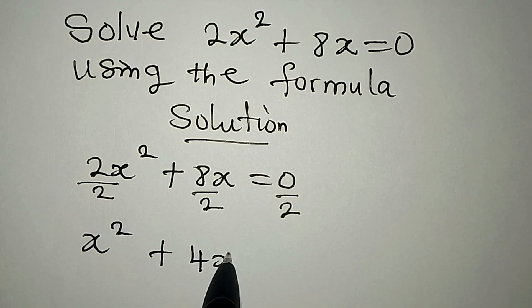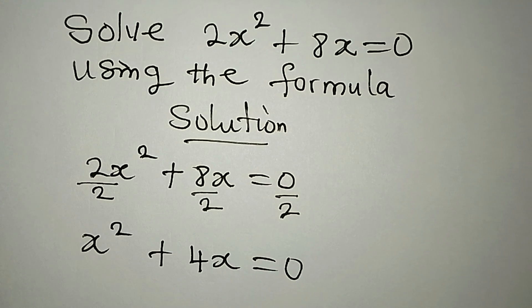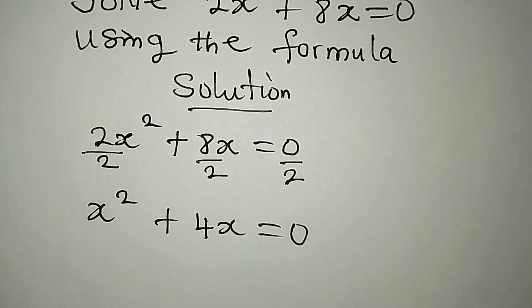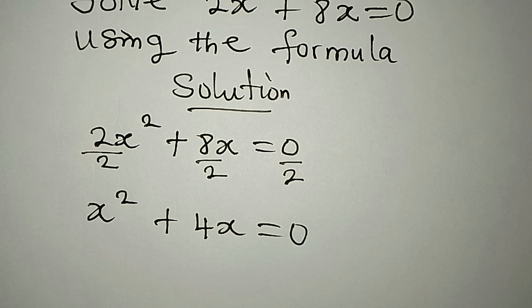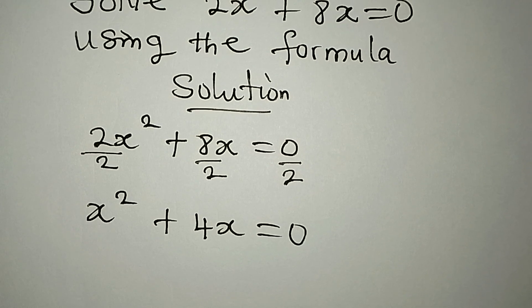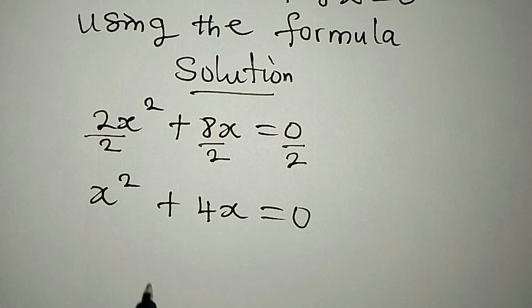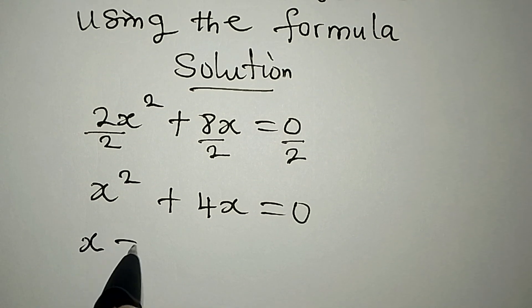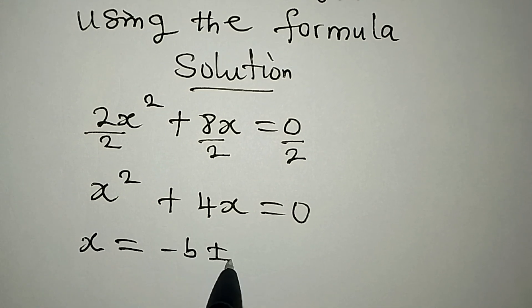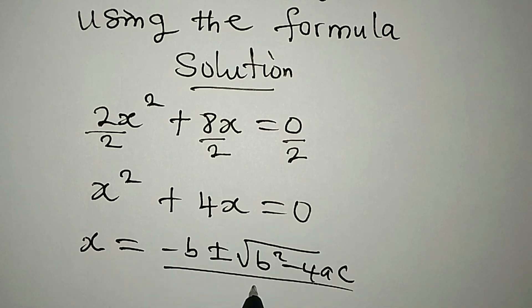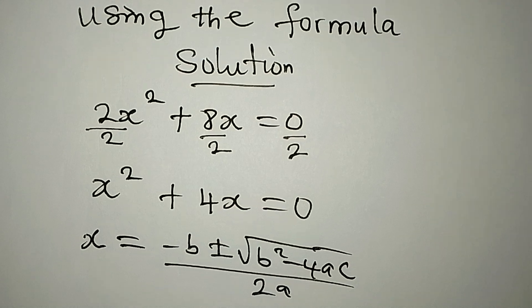We can actually use the factorization method for this, but we are instructed to solve this by using the formula method. What is the formula? x is equal to minus b plus or minus square root of b² minus 4ac, over 2 multiplied by a.